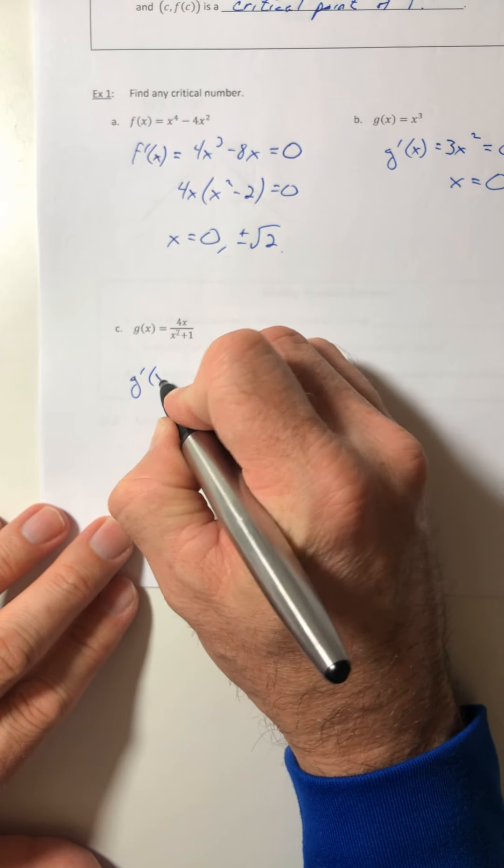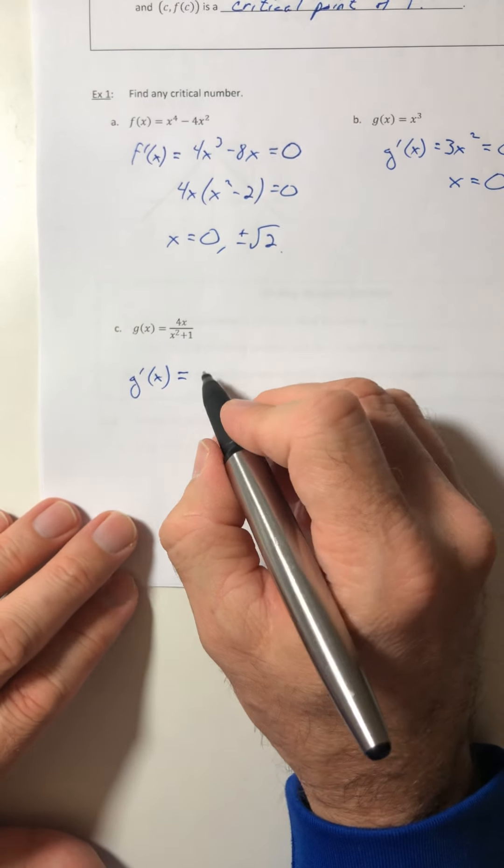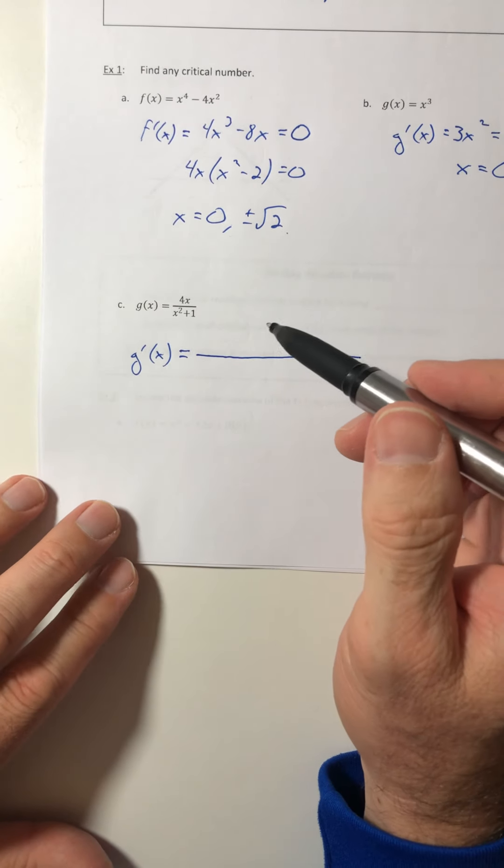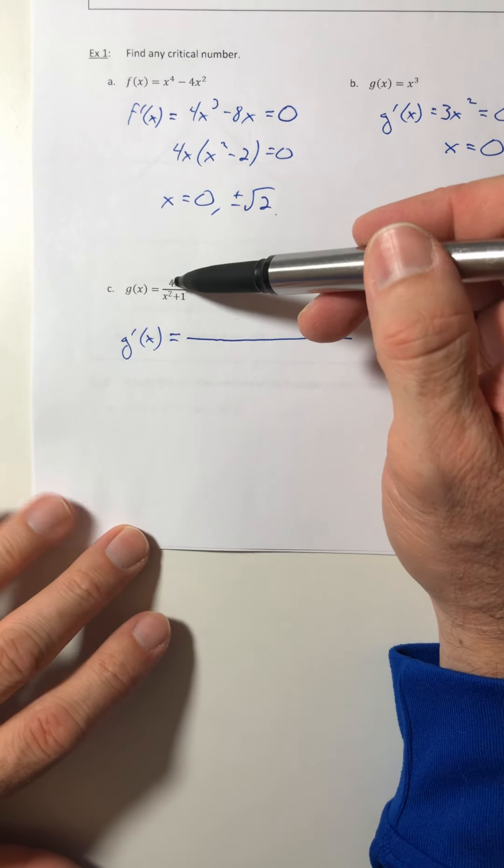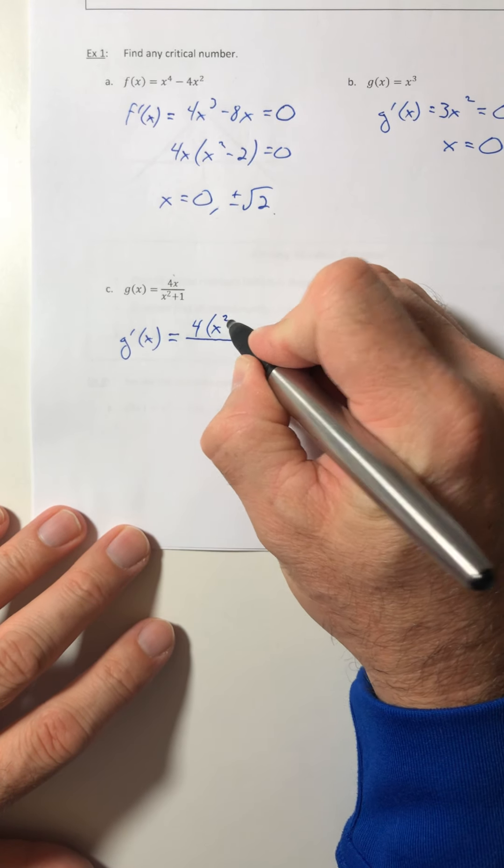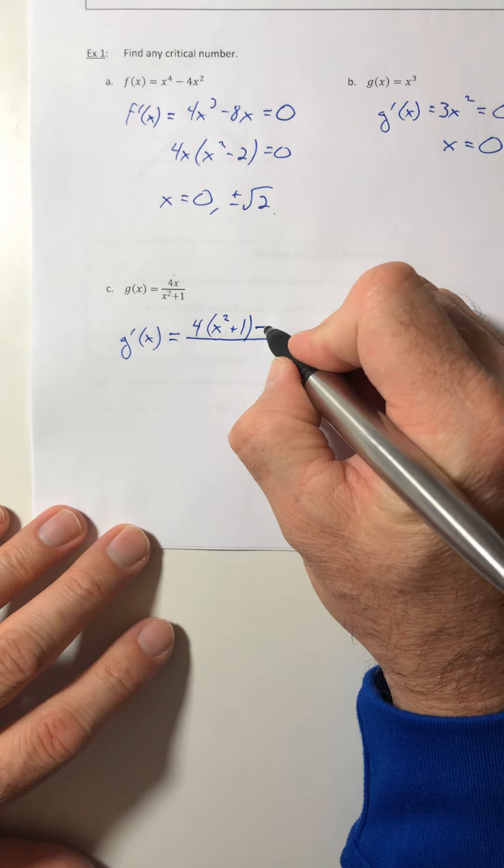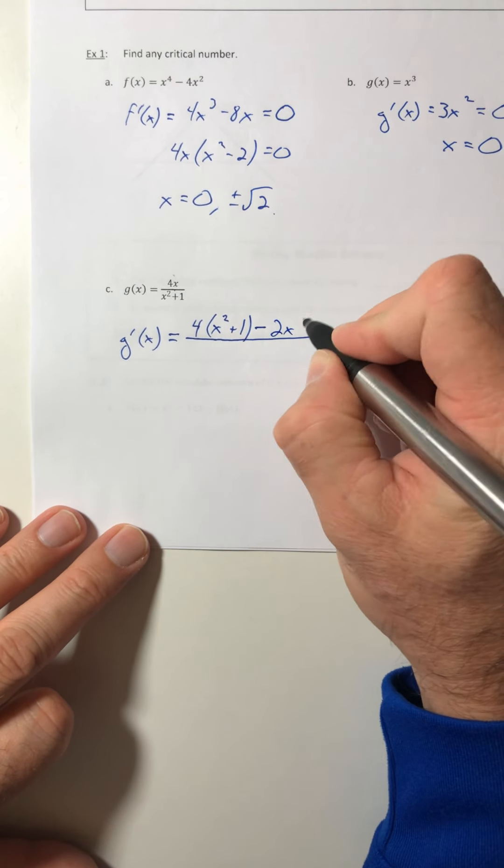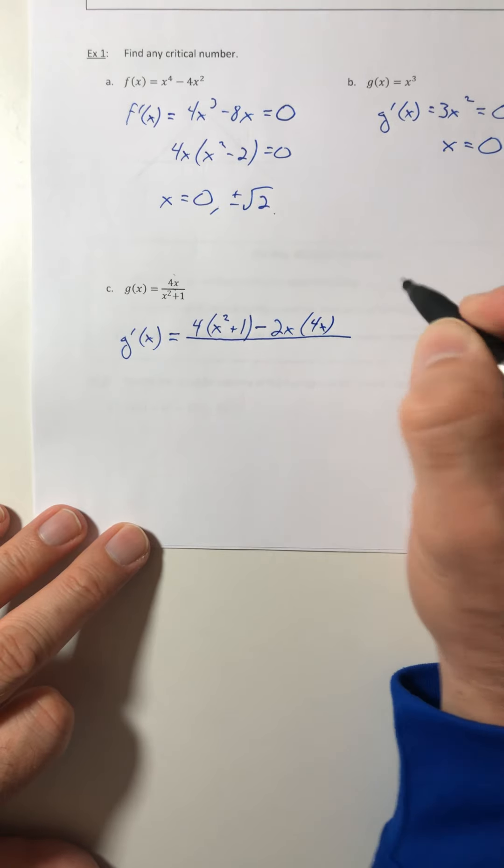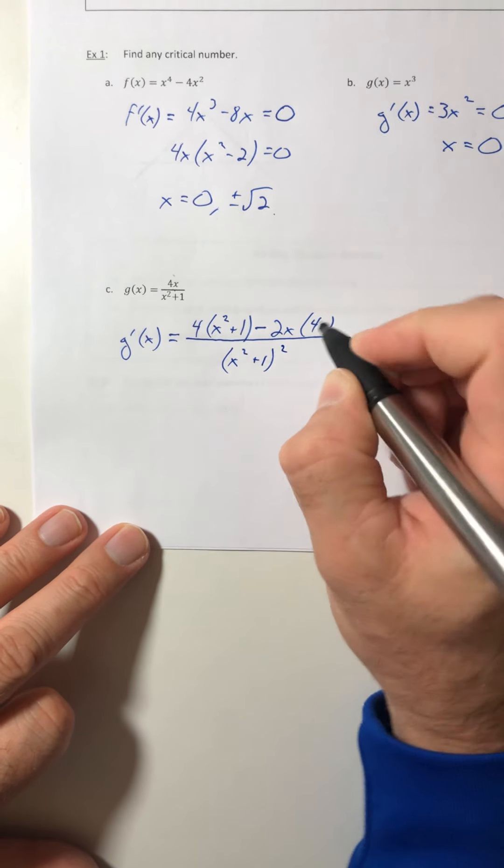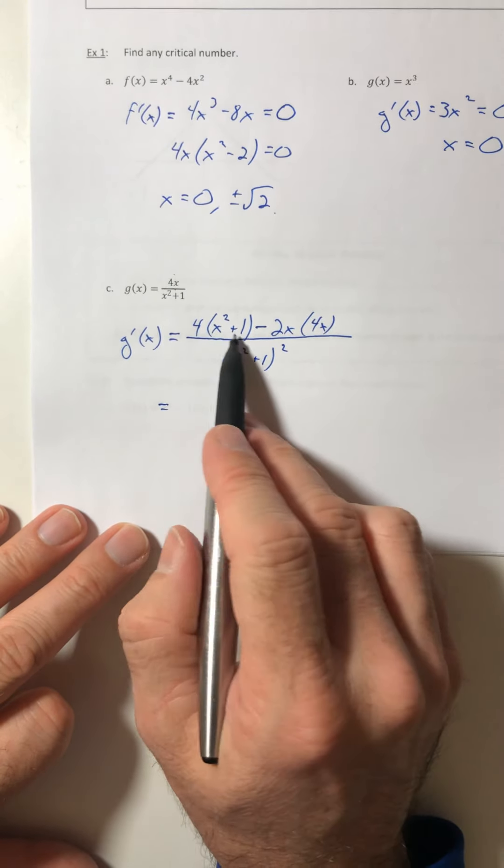All right, well, let's just go through it. Okay, derivative of the top is 4 times the bottom, minus the derivative of the bottom times the top. Oh, it wasn't too bad. All over the denominator squared. So let's go ahead and simplify this out.